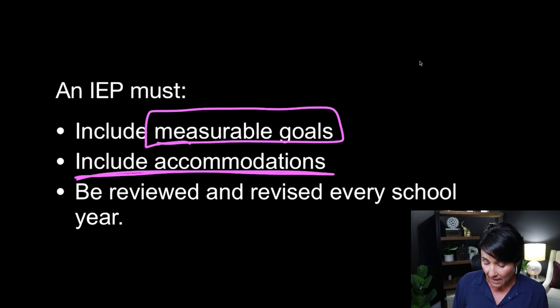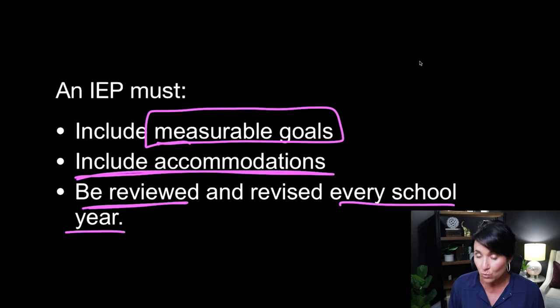The IEP must be reviewed every school year — every year. That's important. Your goals don't stay the same year to year. You want to have new goals. Obviously your goals in first grade are going to change by fifth, sixth, and seventh grade. So we always want to revisit the IEP, revise it with the team, and make new measurable goals.